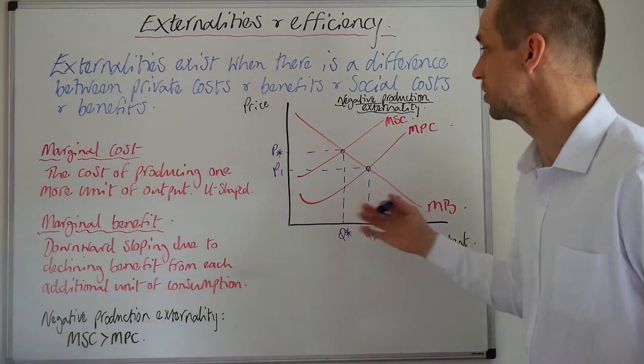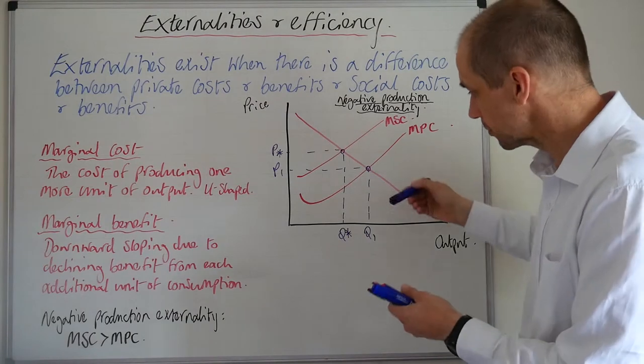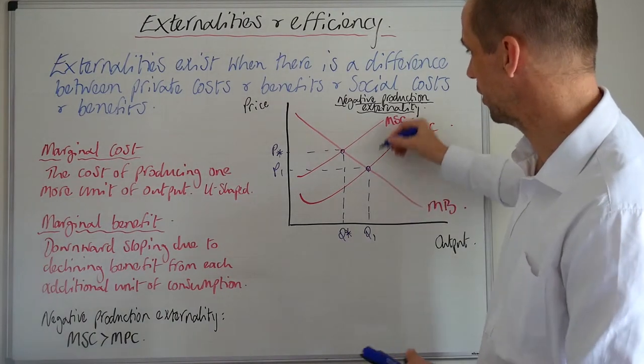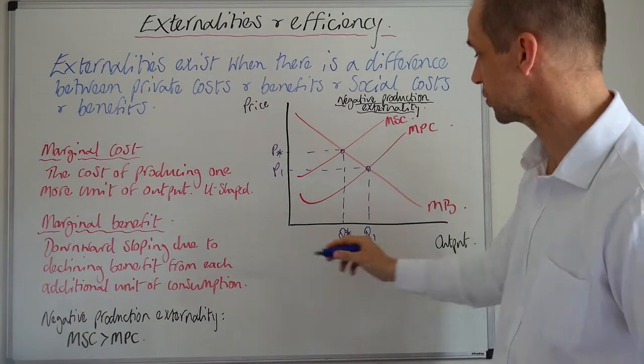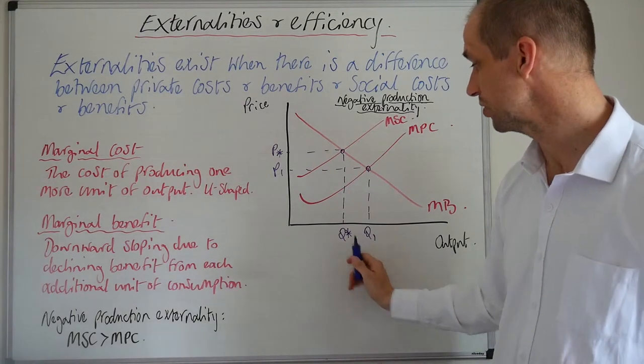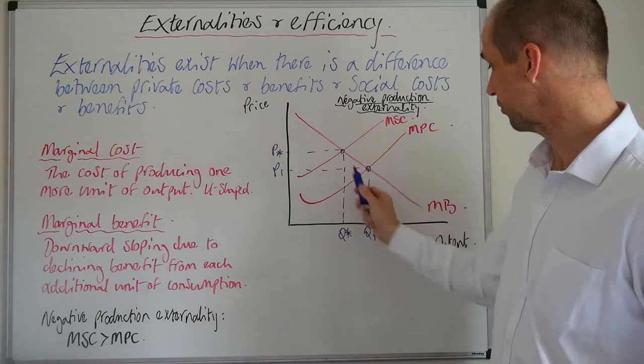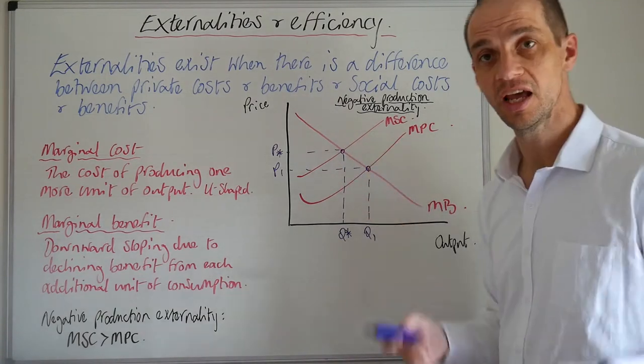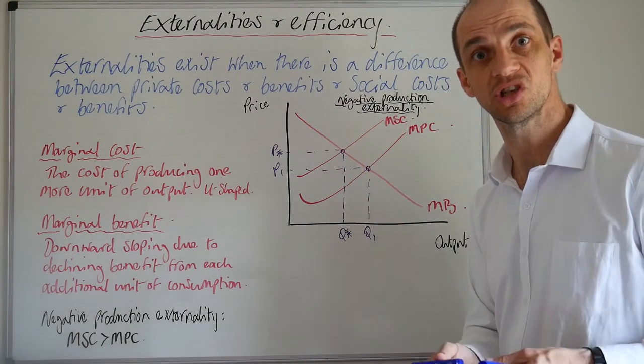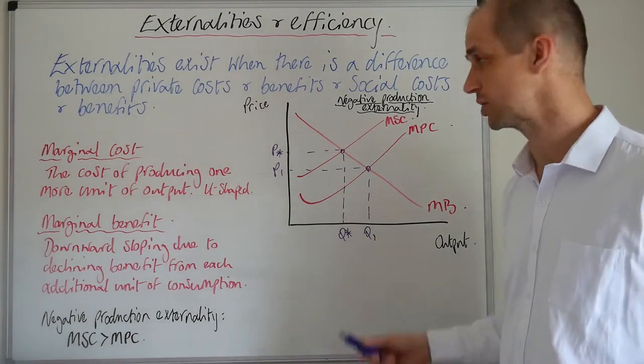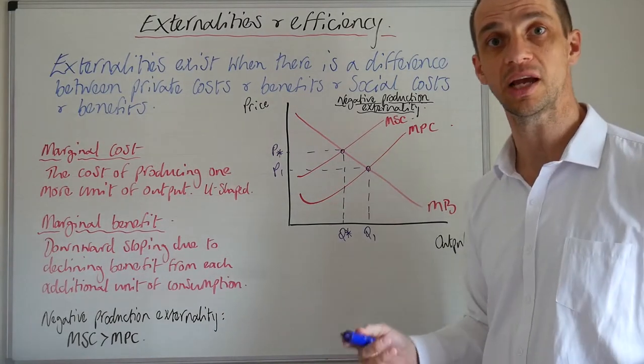So what can we also determine from this? Well, we can see at Q1 that there is an additional cost. Output is currently at Q1. Society would prefer it to be at Q star. That is, after all, where the marginal benefit equals the marginal social cost, the true cost of actually producing this economic output.